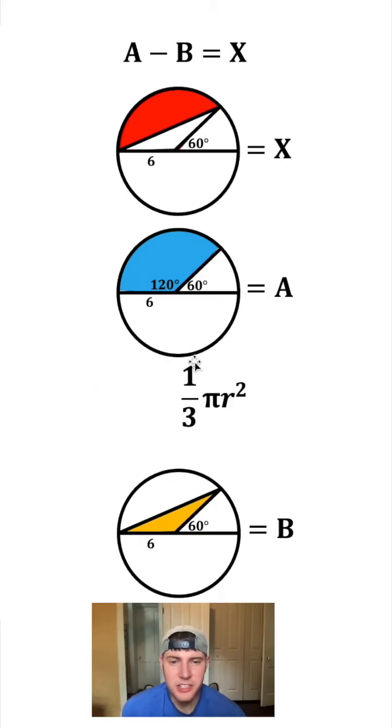And then the radius here is 6, so I'm going to plug in 6 for R. 6 squared is 36, and then 1 third of 36 is 12. So 12 pi is our answer, and we can even move it up here to the A.